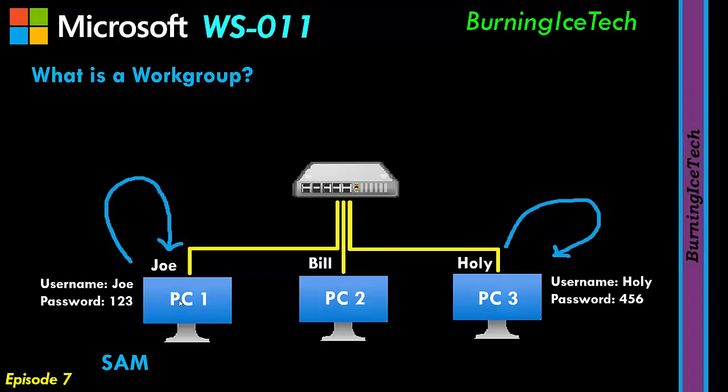As for SAM — the SAM is basically a local database on that specific PC that contains all the usernames and all their respective passwords. Each PC has its own SAM: PC1 will have its own SAM, PC2 will have its own SAM, and PC3 will have its own SAM. Each of them has their own little database with its own usernames and respective passwords. SAM stands for Security Account Manager. The important thing is that each PC has its own unique SAM — a database containing its accounts and passwords. That is what a workgroup is: it authenticates locally on each machine, which is the exact opposite of a domain network.